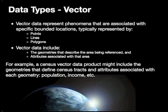As an example, you could think of a census data file as a vector data product that has census tract or block group boundaries defined as a polygon, and then there are a set of attributes associated with each geometry in that dataset representing attributes such as population, income, and other values.